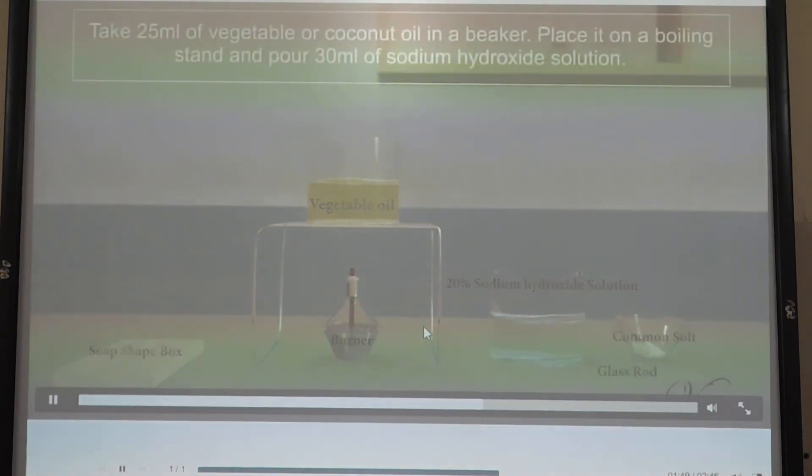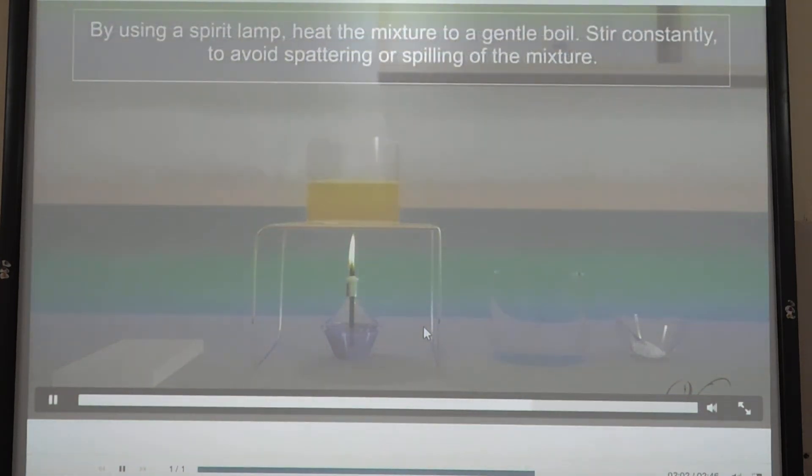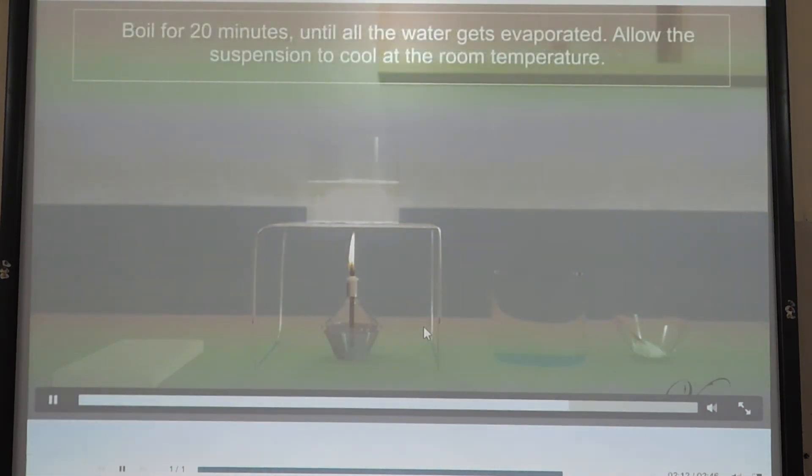Procedure: Take 25 ml of vegetable or coconut oil in a beaker. Place it on a boiling stand and pour 30 ml of sodium hydroxide solution. Using the spirit lamp, heat the mixture to a gentle boil. Stir constantly to avoid spattering or spilling of the mixture. Boil for 20 minutes until all the water gets evaporated.